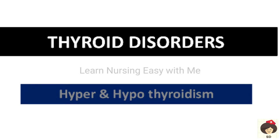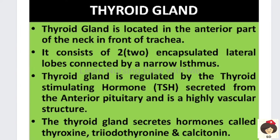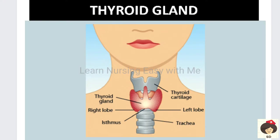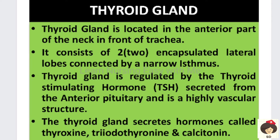Before going to the disease condition, let us see the anatomy and physiology of the thyroid gland. The thyroid gland is located in the anterior part of the neck, in front of the trachea. It consists of two lobes with an encapsulated lobe, and in between there is a narrow connection called the isthmus. The thyroid gland is regulated by the hormone called thyroid stimulating hormone, secreted from the anterior pituitary gland, and the thyroid gland is highly vascular in nature.